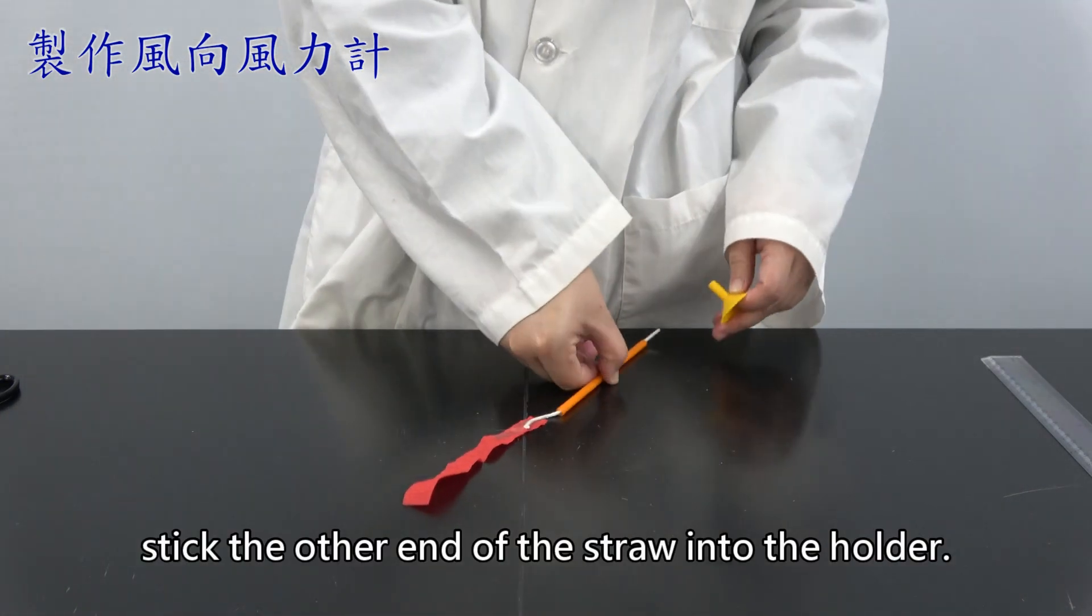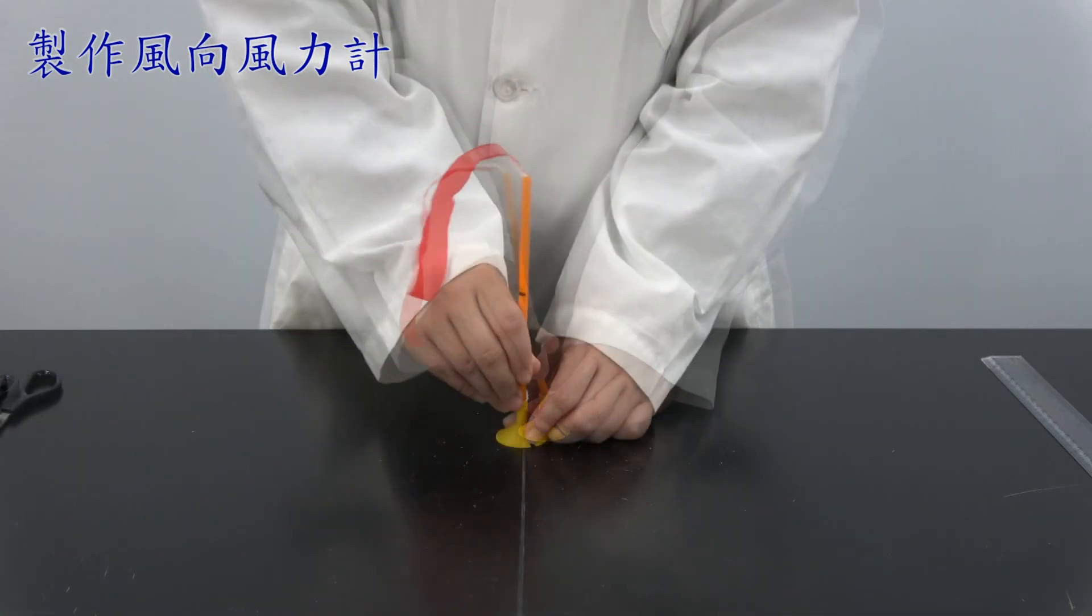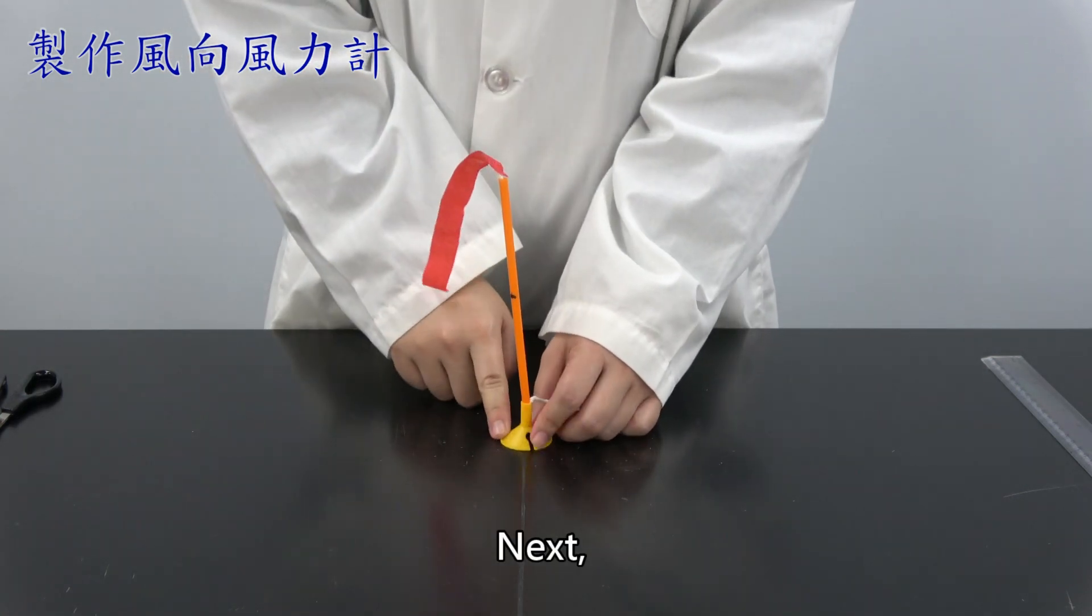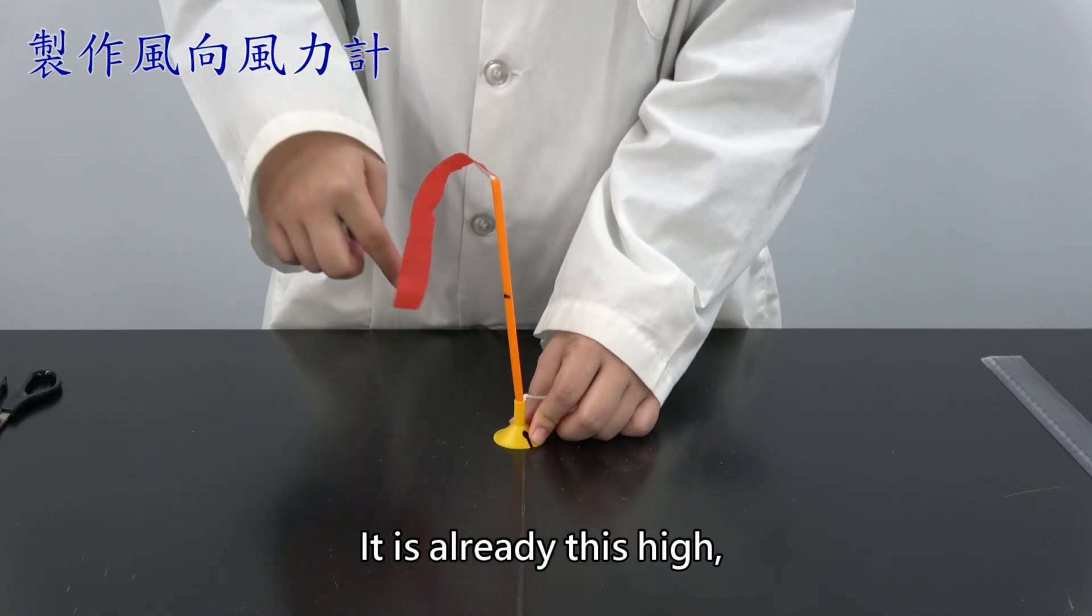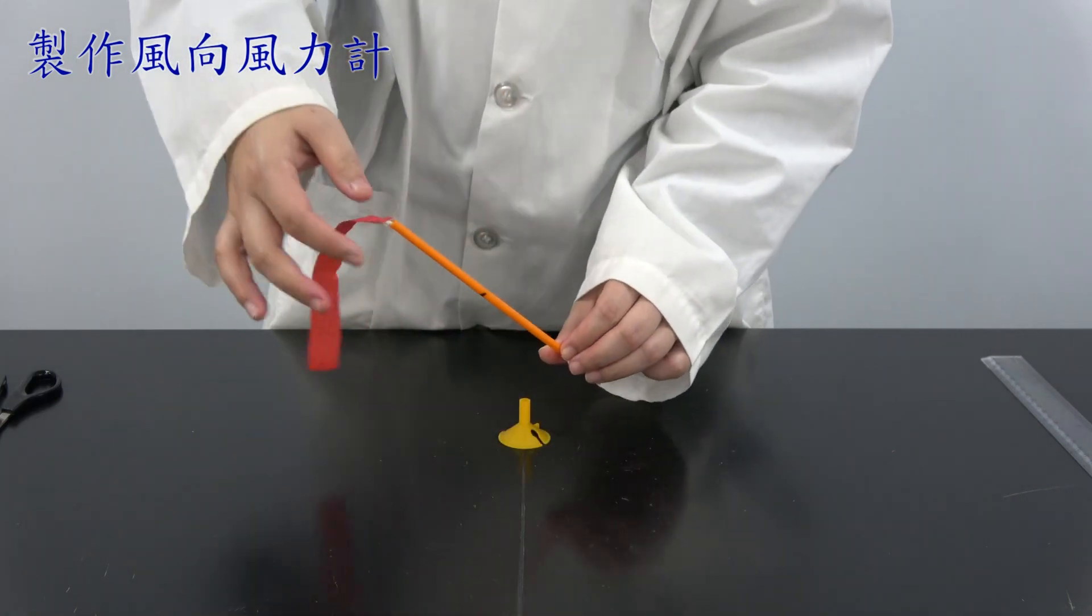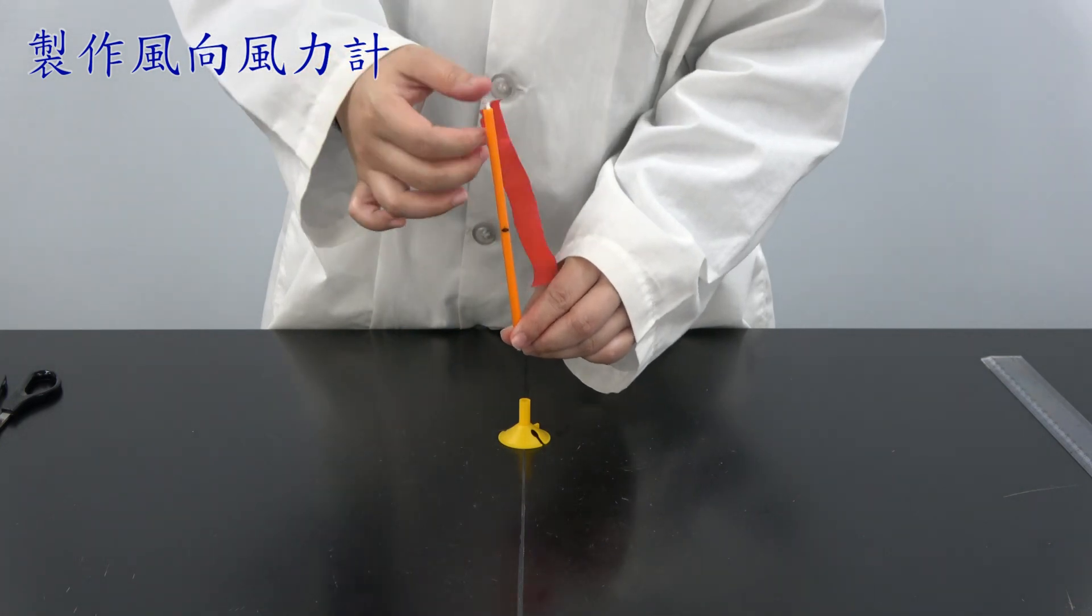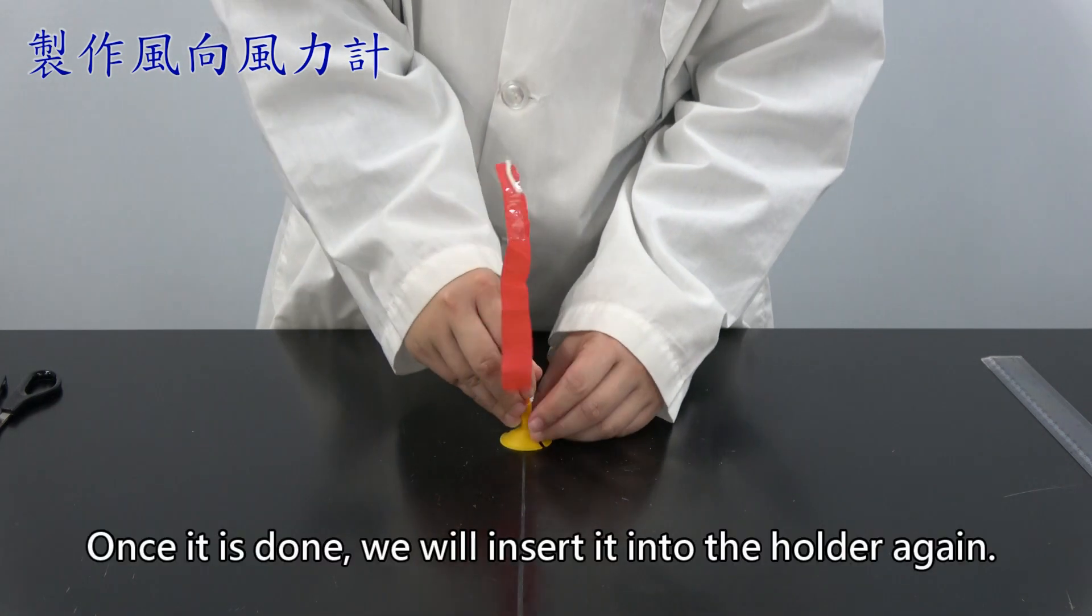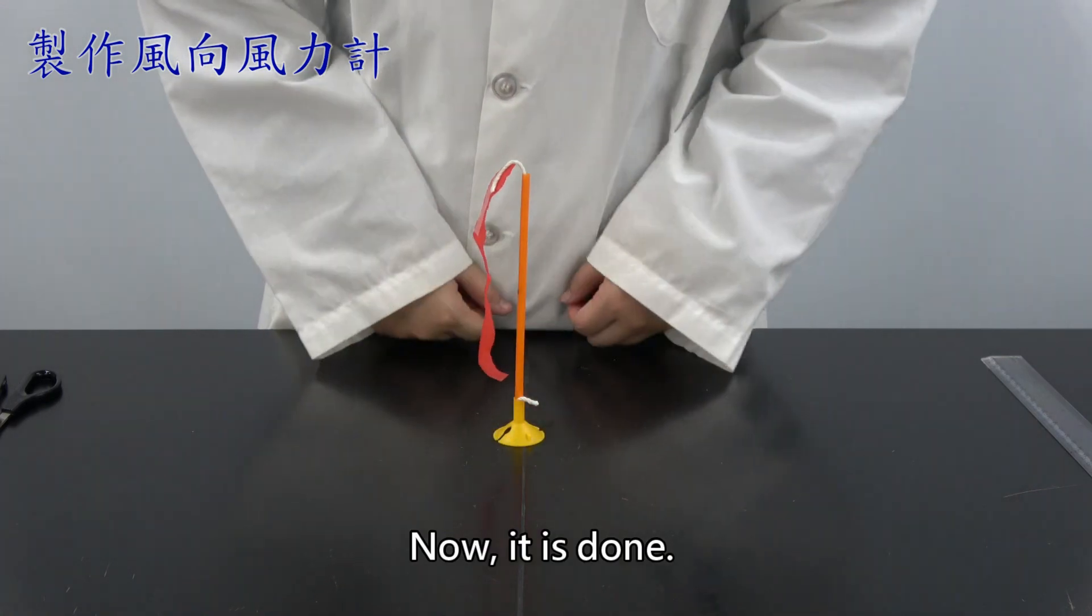Once it is done, stick the other end of the straw into the holder. Insert the straw into the holder. Next, adjust the height of the crepe paper. It is already this high, so we still have to adjust the thread. Put it out a little, so it will hang naturally. Once it is done, we will insert it into the holder again. Now, it is done.